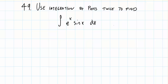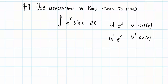The first thing we need to do is determine what u and v prime are going to be. In this question, if we let e to the x be u, then u prime will also be e to the x. And if we let sine of x be v prime, then v is going to be negative cosine of x. And then we integrate by parts.